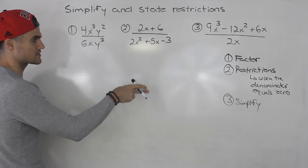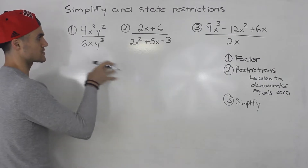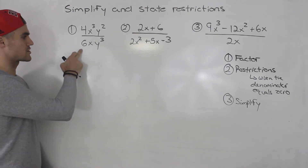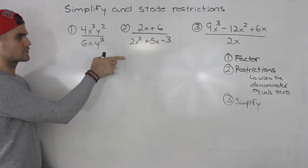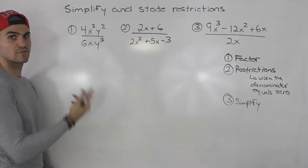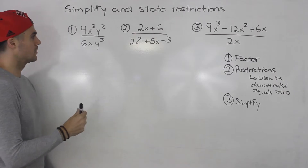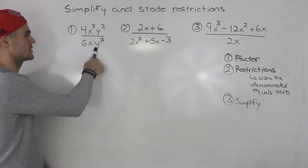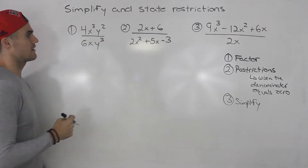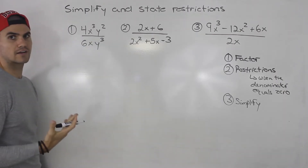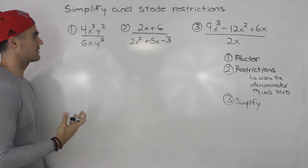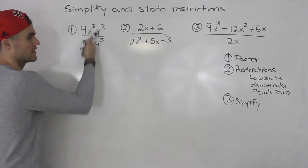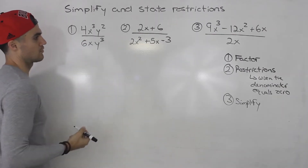Let's follow this three-step process for each of these. Starting with the first rational expression, step one is we have to factor. If we look at the numerator and the denominator, notice everything's already factored — there's nothing else that we can factor in either.